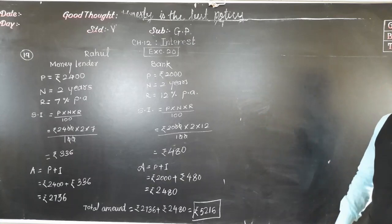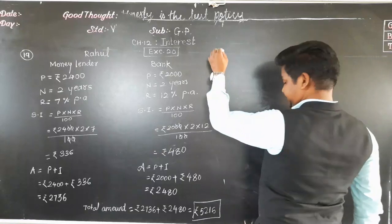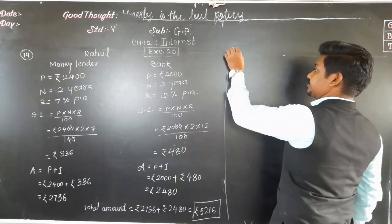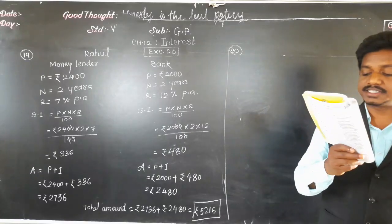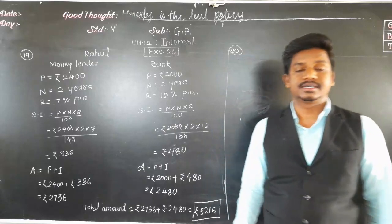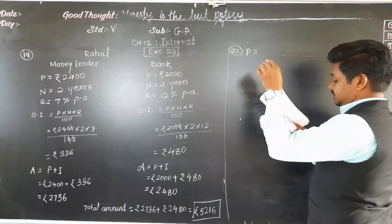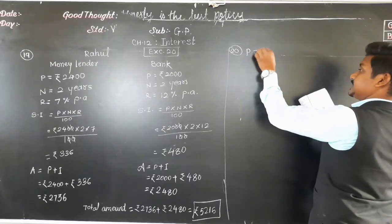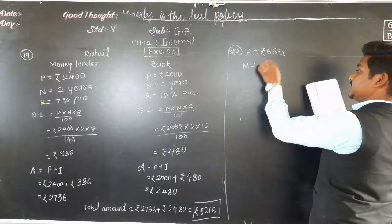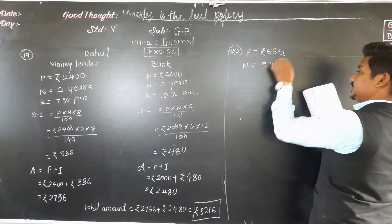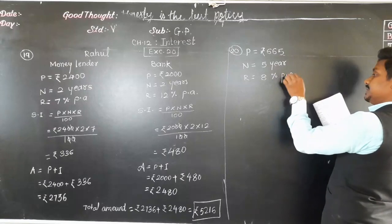Pause this video and write this example in your notebook. Now example number 20: find the amount of rupees 665 in 5 years at 8% per annum. The principal is rupees 665, for 5 years, and the rate of interest is 8% per annum.